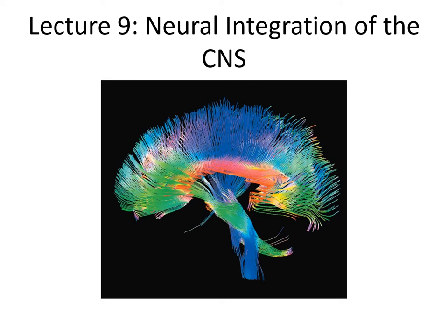Hi everyone. This is lecture 9 on neural integration of the CNS. This is probably the most complex part of the nervous system, so I tried to keep it simple and short just to give you an idea of some of the complexities that are involved in just doing a reflex of your body.